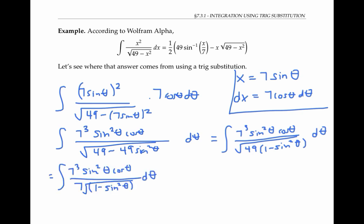Now here is where a little bit of magic occurs. I know that one minus sine squared theta is equal to cosine squared theta by the Pythagorean identity.